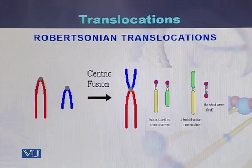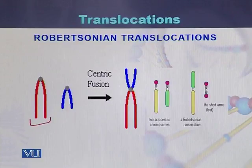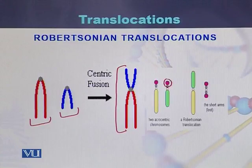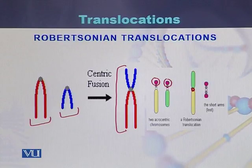Robertsonian translocation explained with the help of diagrams: here we can see two acrocentric chromosomes — acrocentric chromosome 1 and acrocentric chromosome 2. As a result of translocation or fusion, they join with each other and form one single chromosome. In another diagram, we can see that the small fragments of the DNA are deleted, and as a result of translocation, the large fragments join with each other. This phenomenon is called Robertsonian translocation.